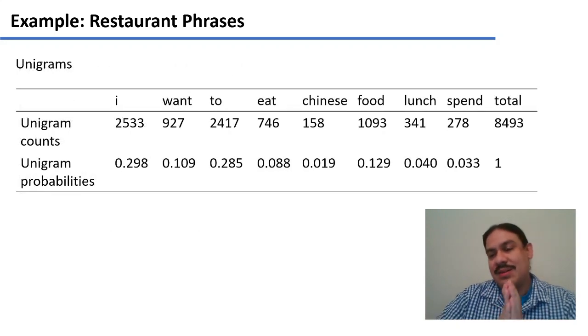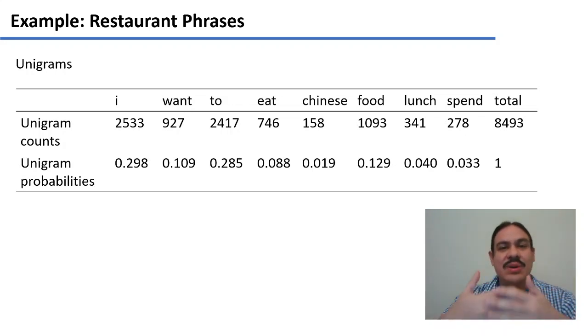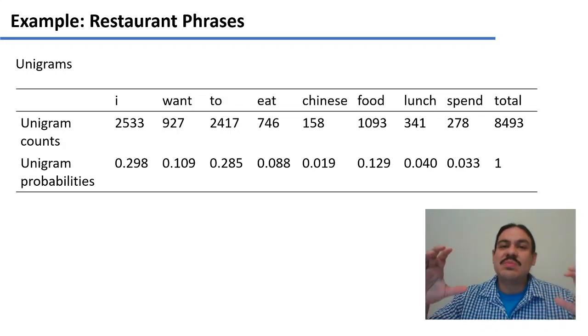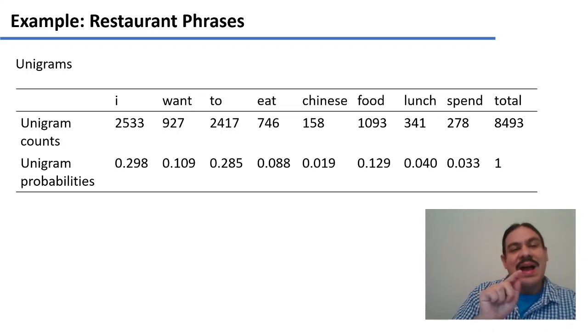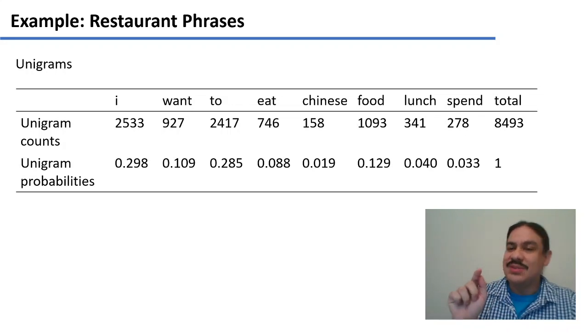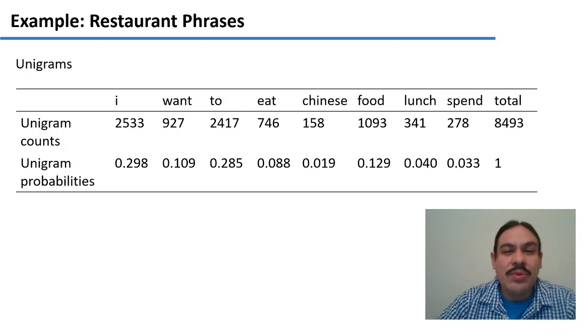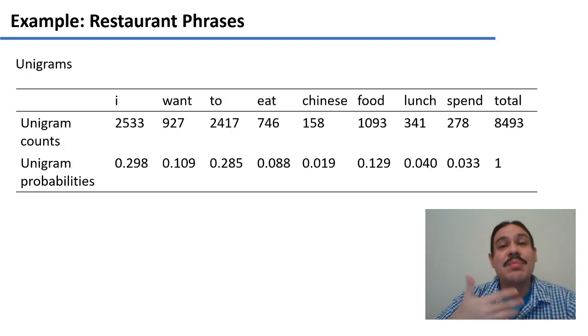One example that we can derive from this is the probabilities for independent sentences and we're going to use a small subset of the results for this. We have the words I, want, to, eat, Chinese, food, lunch, spend. So eight words, and we're going to derive unigram and bigram probabilities for those words.